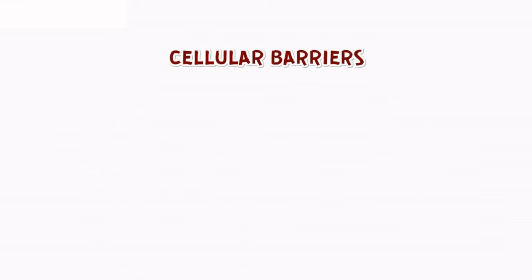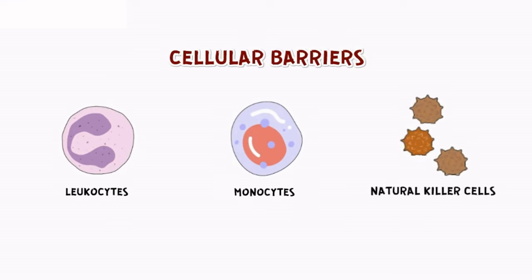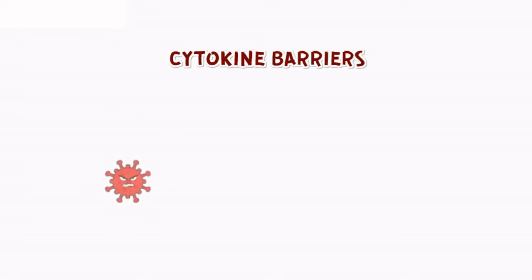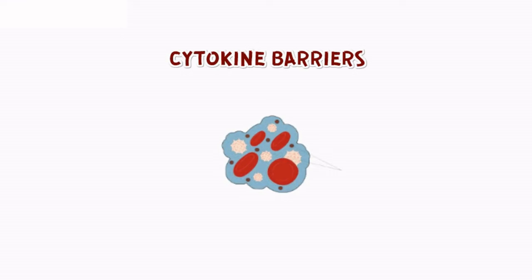Cellular barriers like certain types of leukocytes (WBCs), such as monocytes and natural killer cells, can destroy microbes. Finally, cytokine barriers: virus-infected cells secrete proteins called interferons, which protect non-infected cells from further viral infection.